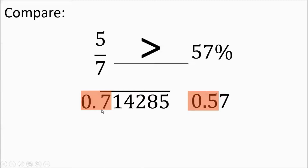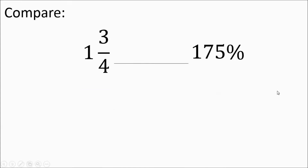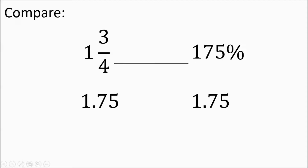Even if you don't have the sevenths trick down, as long as you find what's in the tenths place — and maybe go out to the hundredths occasionally — you'll usually be able to determine which number is larger. Now we have a mixed fraction compared to a large percentage: one and three-fourths equals 1.75, and 175 percent slides to 1.75 as well. These two numbers are equal.